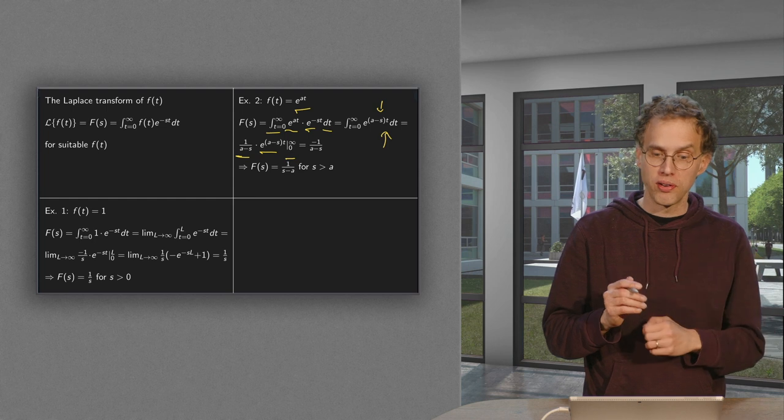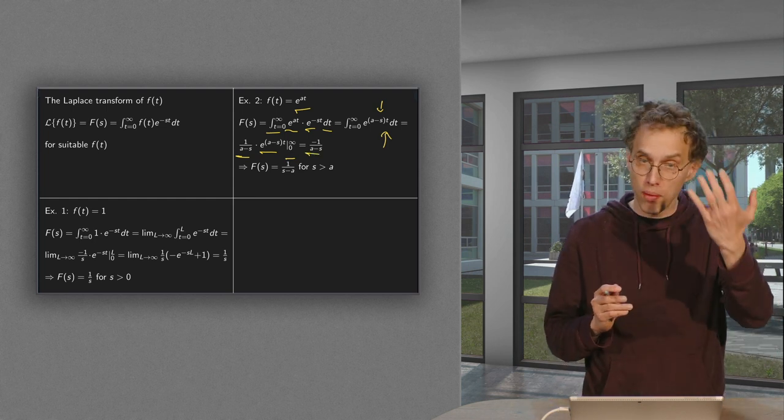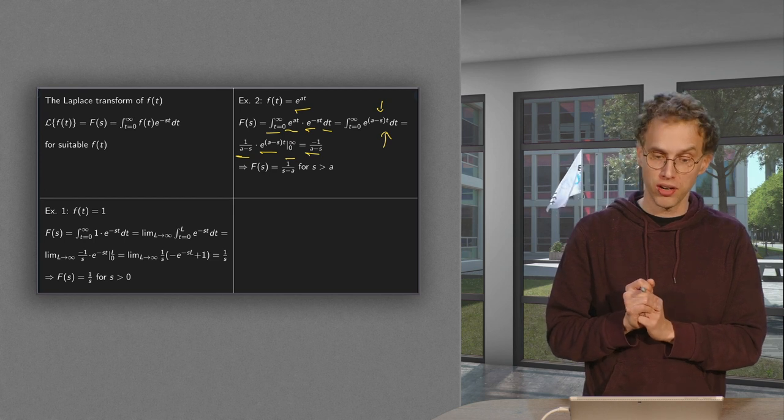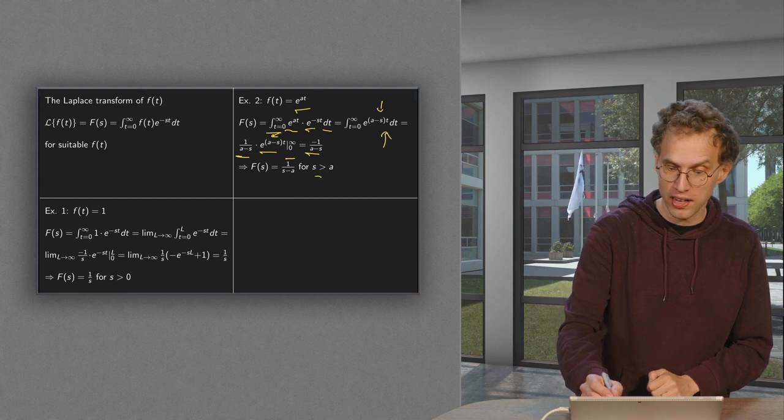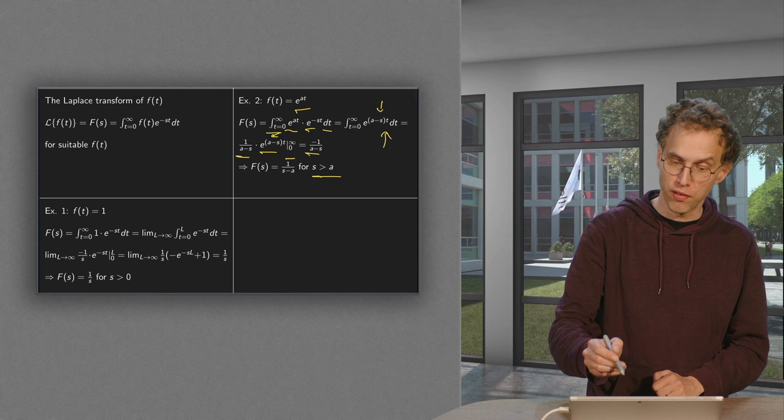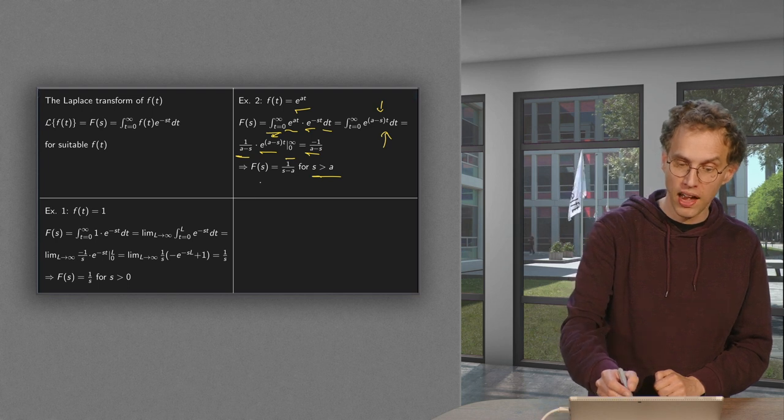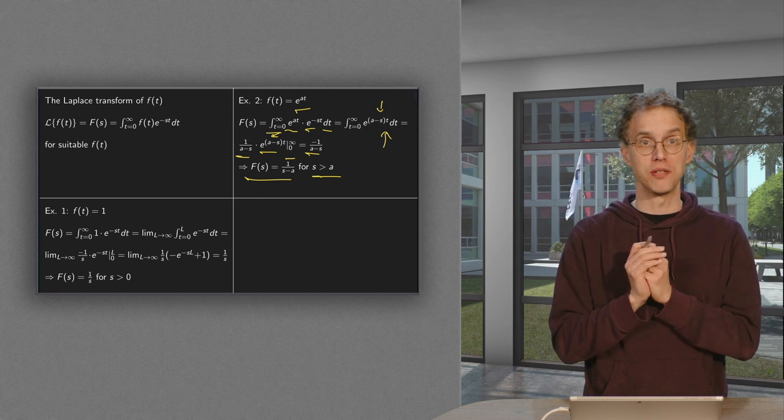Then we plug in the boundaries 0 and infinity. Now the lower boundary gives us a minus 1 over (a minus s), and the upper boundary gives us a 0, provided this stuff over here is negative, so provided s is bigger than a. So ℒ{f}(s) exists provided s is bigger than a, and ℒ{f}(s) equals 1 over (s minus a).